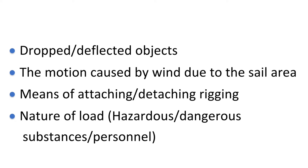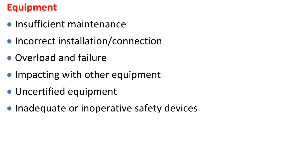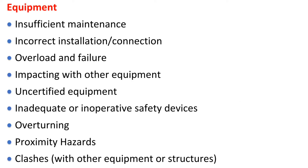Motion caused by wind due to the sail area. Means of attaching and detaching rigging: nature of load, hazardous and dangerous substances, personnel equipment, insufficient maintenance, incorrect installation and connection, overload and failure, impacting with other equipment, and uncertified equipment.